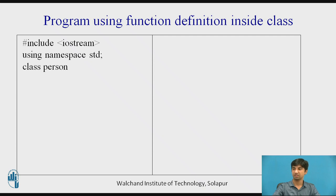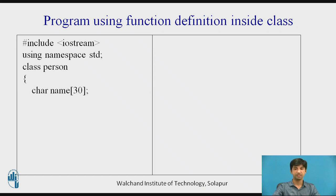It basically starts with declaring the class — same as declaring a data type. 'Class person' — where 'class' is the keyword and 'person' is the class name. Then, opening the curly brace. We declare 'char name[30]', meaning name is a variable of 30 characters, and 'int age', an integer variable. These two variables are under private, meaning they cannot be accessed by anyone outside this class.